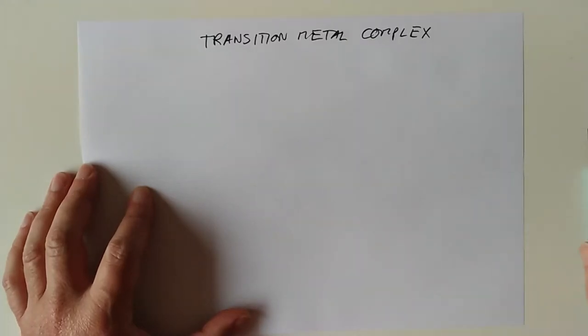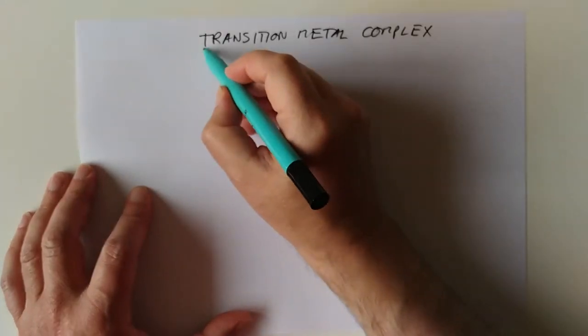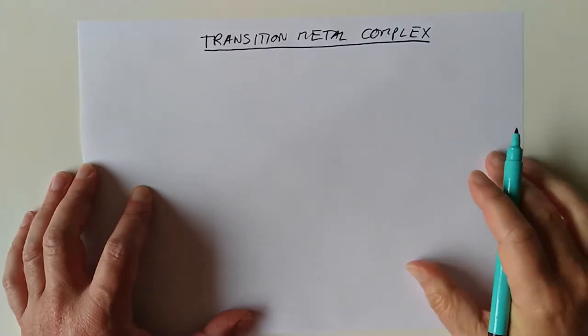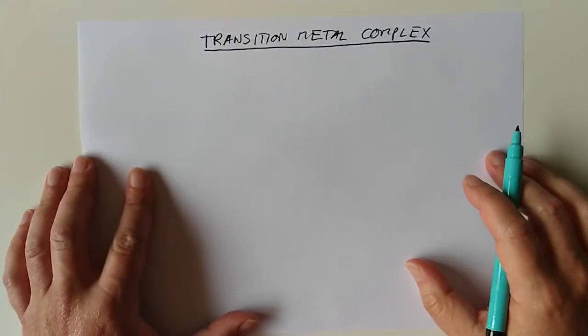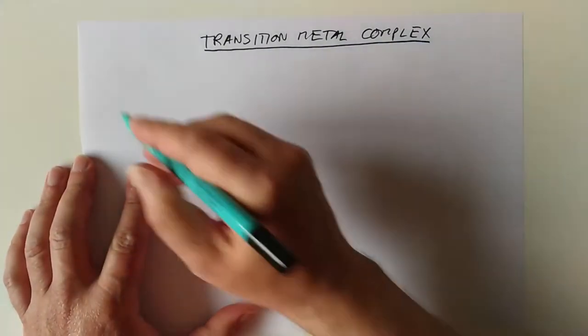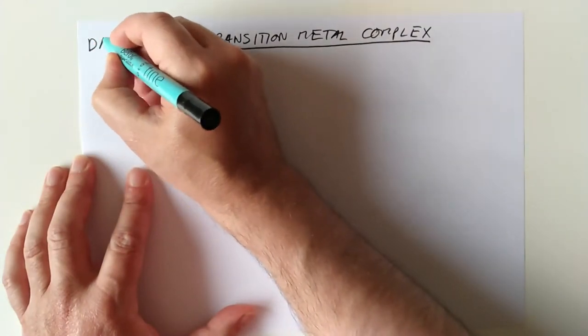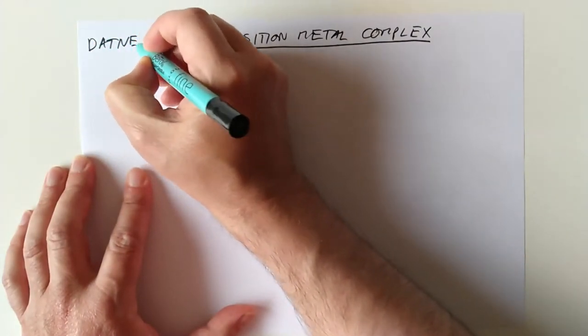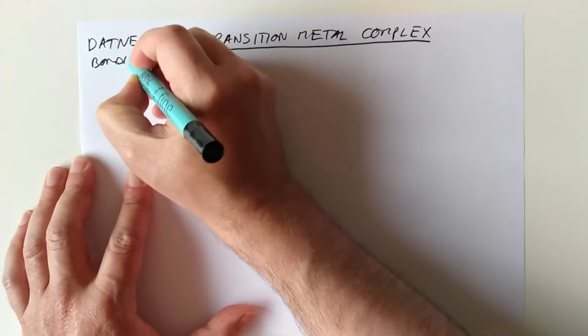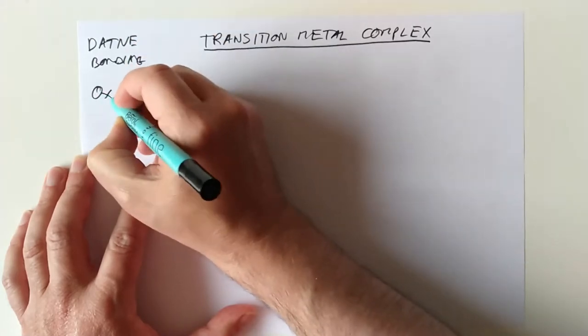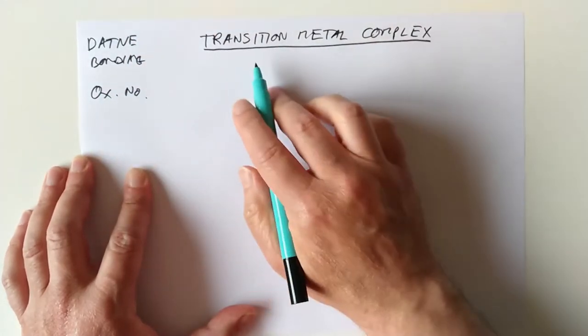Good afternoon folks, welcome back to Advanced Higher Chemistry. I would like to tackle what these things are today, and how they link to the last two apparently random concepts that I threw at you in the last video, which was dative bonding, and the oxidation number, or oxidation state, of a transition metal.